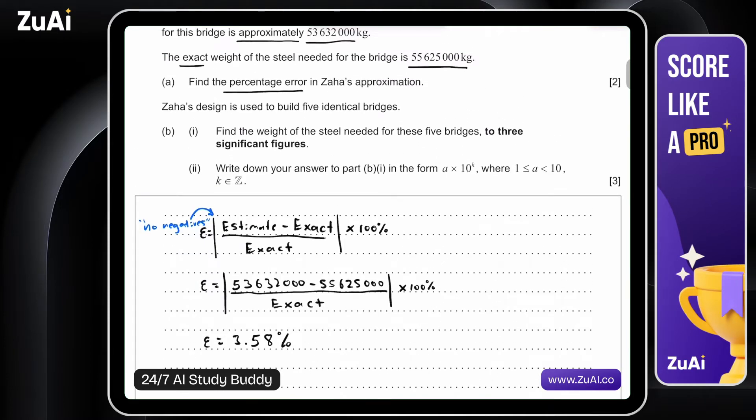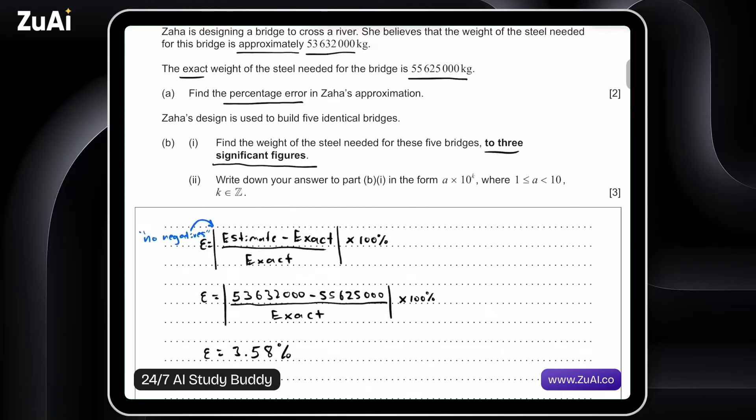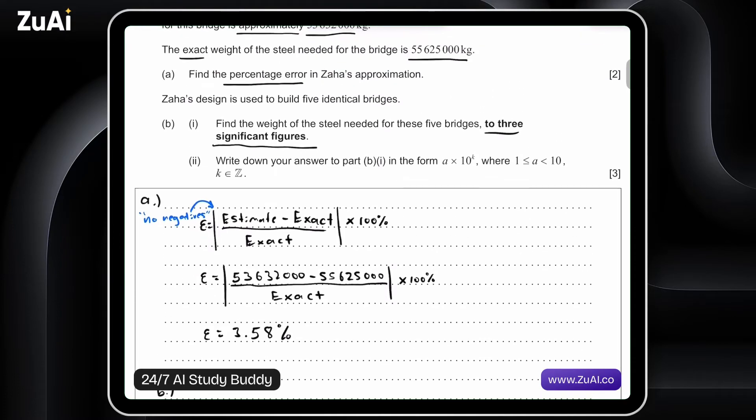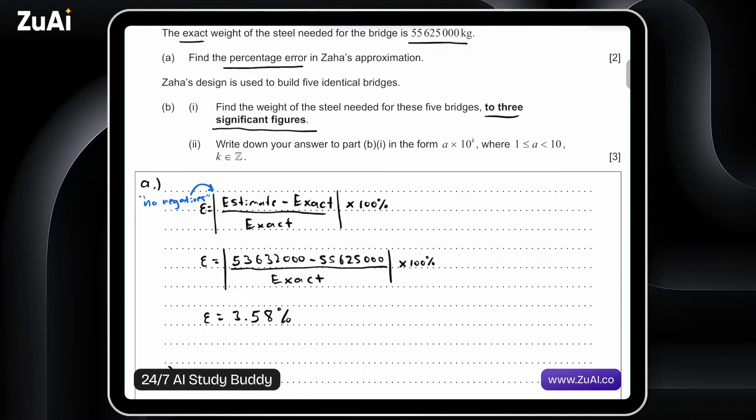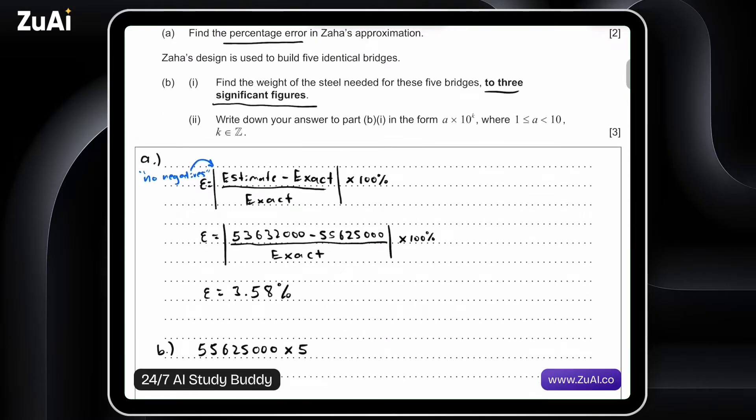Zaha's design is used to build five identical bridges. Find the weight of the steel needed for these five bridges to three significant figures. So what they're testing here is an ability to round and then also familiarity with three significant figures and what that means. So let's go ahead and work this out. So the exact value of the bridge, let's write out part B right here. The exact weight of one of these bridges is 55,625,000 and what we want is we want to build five identical bridges. So actually, let's go back to the calculator and work this out.